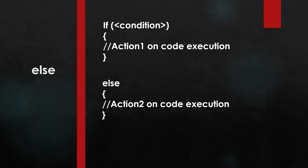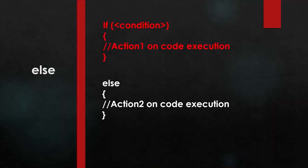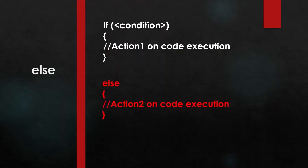If you write if and else together, the first code will be executed when the if condition is true. So if the first condition is true, action one will be taken — the code written in action one will execute. Else, if that condition is not true, the else statement runs and the code in action two will be executed.